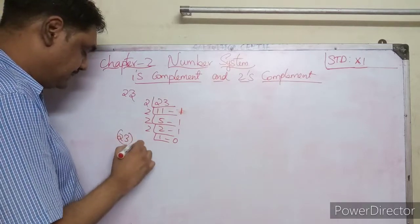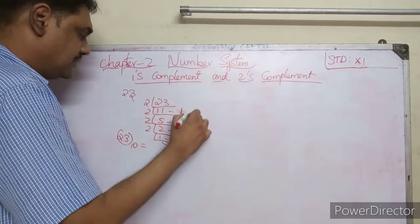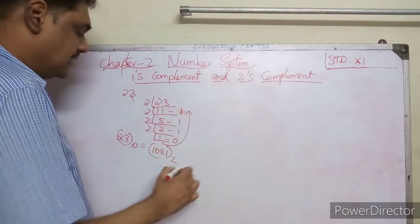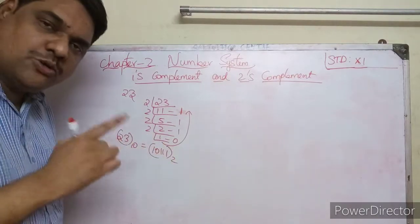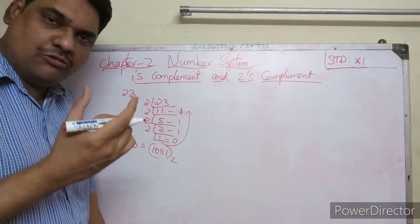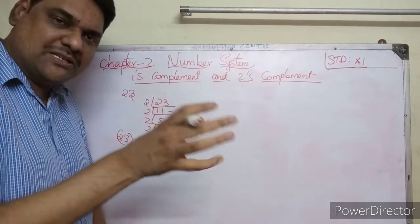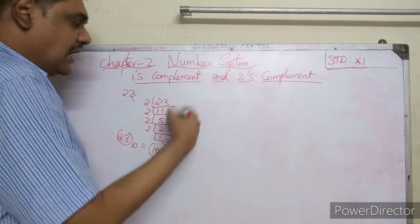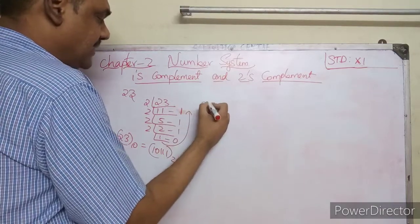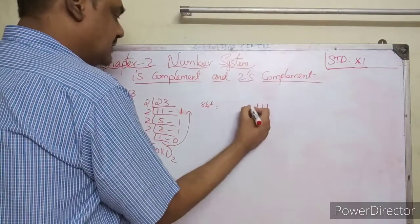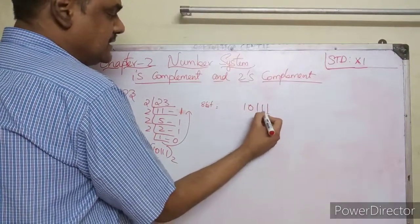So 23 becomes 10111 in binary. This is how it's stored internally. The minimum is one bit; microprocessors access 8 bits. So we need to convert this to 8 bits.